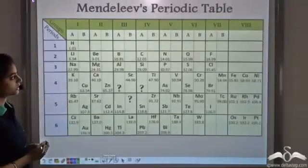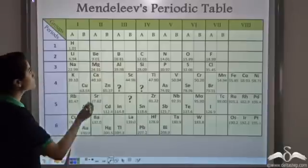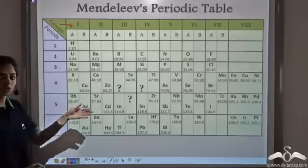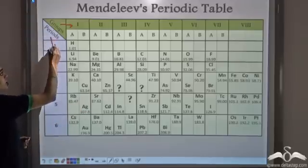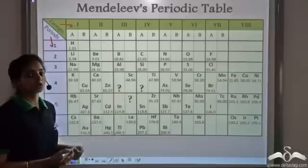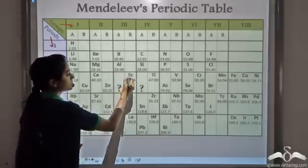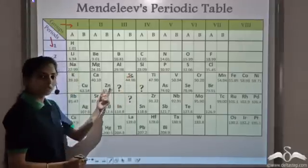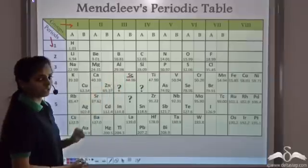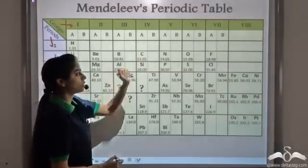This is Mendeleev's periodic table. It has eight vertical columns which are known as groups, and six horizontal rows that are known as periods. He arranged the elements in increasing order of atomic mass. When he reached calcium, he observed that the element after calcium — scandium — did not show properties similar to boron or aluminium, neither did it show properties similar to carbon or silicon.